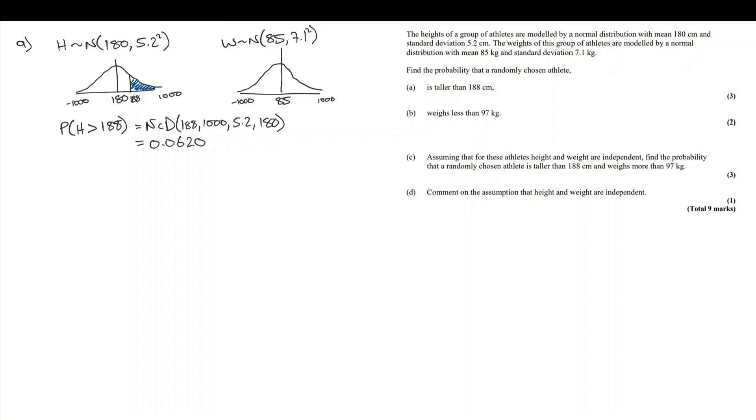A quick sense check to get us on track there. Part B wanted a weight that was less than 97. 97 would appear on the diagram over here on the right-hand side. And less than 97, this shaded region is quite large. It's going to be bigger than 50%. We're expecting an answer larger than 50%.